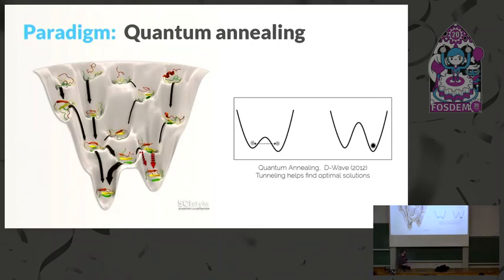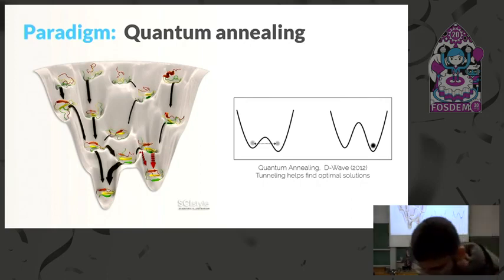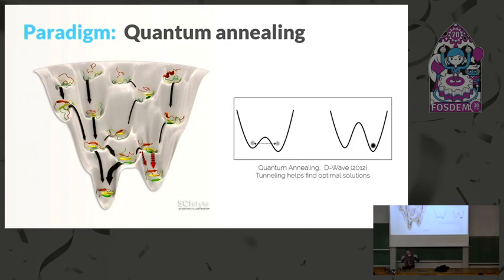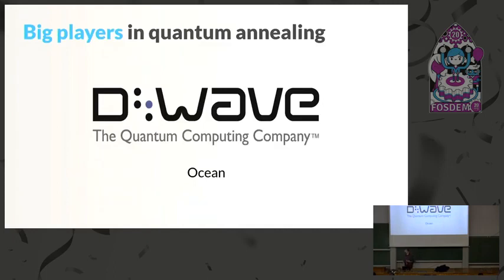In quantum annealing, we're trying to find solutions to optimization problems. We specify some sort of energy landscape by defining hyperparameters, and quantum annealing is a process that tries to find the minimum energy state of the system — the deepest valley of that landscape diagram, corresponding to the lowest-energy conformation. The biggest player in this field is the Canadian company D-Wave, which has been around for more than a decade tackling this problem.